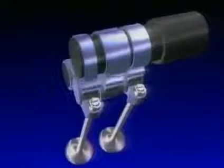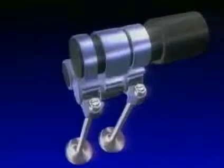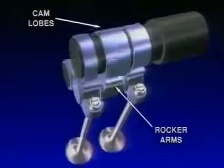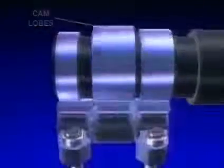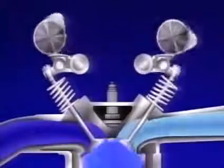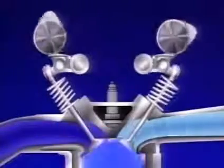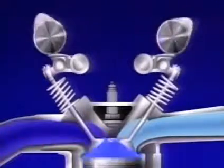Each rocker arm is moved up and down by a cam lobe that rotates with the rotation of the engine. A cam lobe is shaped similar to the shape of an egg, so that as the high point of the lobe pushes on one end of the arm, it causes the other end to push the valve open.